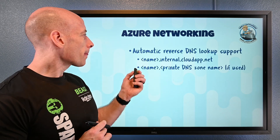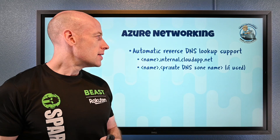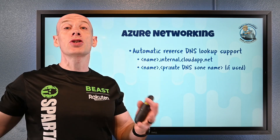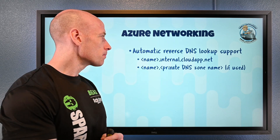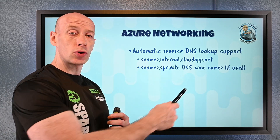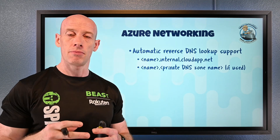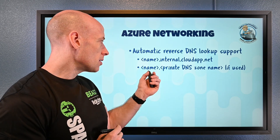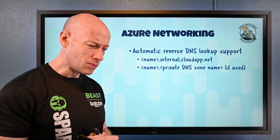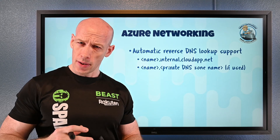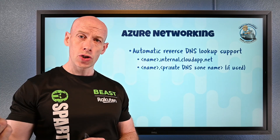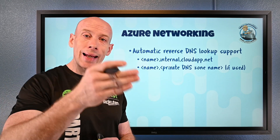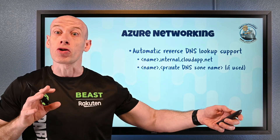On the Azure networking side, we now have automatic reverse DNS zones. If you look up something via IP address with regular Azure DNS, you'll get back a name in the default zone dot internal dot cloud app dot net. If you have a private DNS zone linked to your network, you'll get the name in that private zone. For reverse IP resolution across different virtual networks, you'd still create your own private reverse DNS zone and link it to multiple networks.